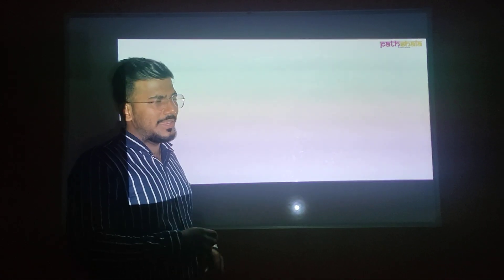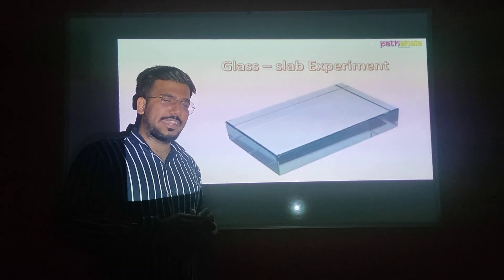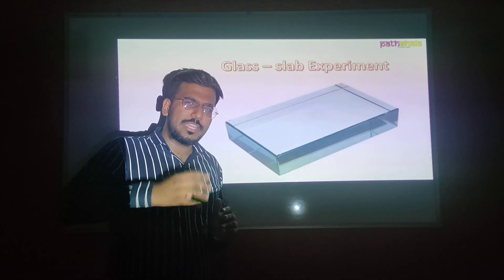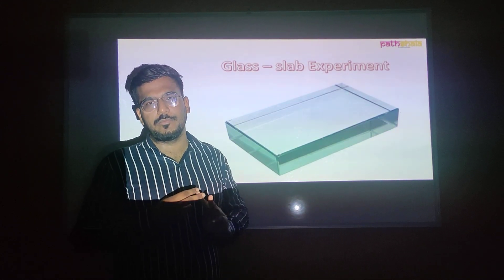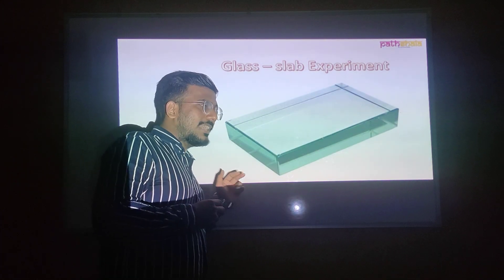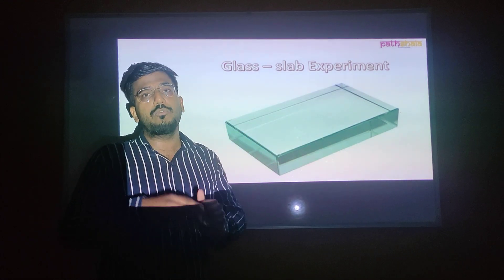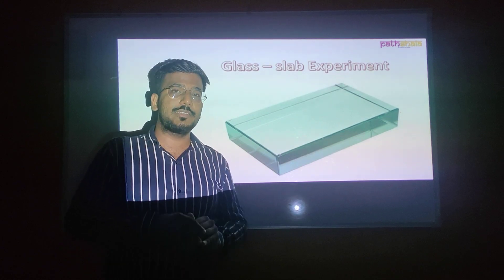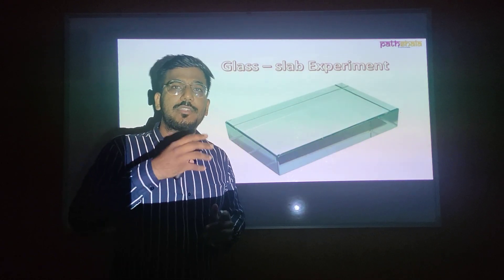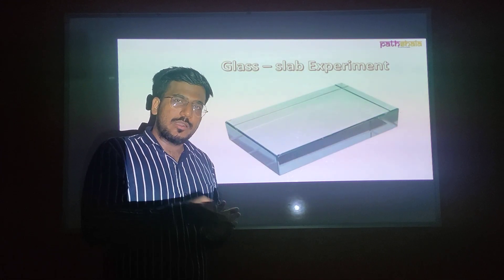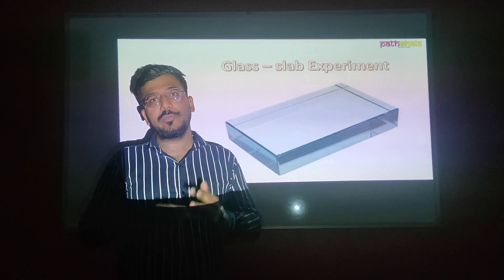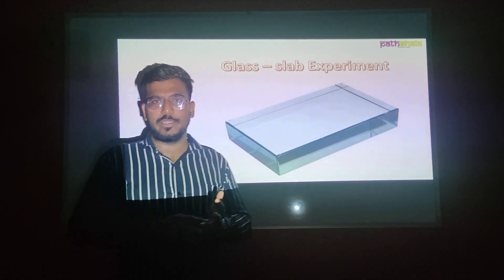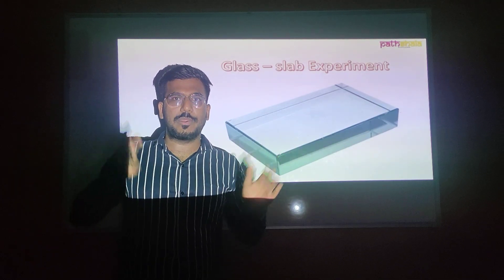Let's understand why and how light bends by looking at the glass slab experiment. Before we begin, we need to understand two terms: rarer medium and denser medium. Glass, in comparison to air, has more particles — since the particles are dense, the glass slab acts as a denser medium. Air, in comparison to glass, has less particles, so air acts as a rarer medium. In rarer medium, particles are less; in denser medium, particles are more.